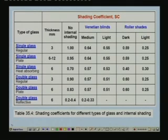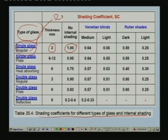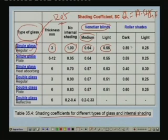An ASHRAE table gives shading coefficients for different glass types and internal shading devices. For a single sheet regular glass of 3 mm (the reference), SC = 1 with no internal shading. With medium Venetian blinds SC = 0.64, light Venetian blinds SC = 0.55, dark roller shade SC = 0.59, and light roller shade SC = 0.25. For regular double glass of 3 mm without internal shading, SC = 0.9. For heat absorbing glass of 6 mm, SC = 0.7.